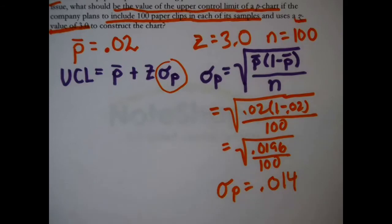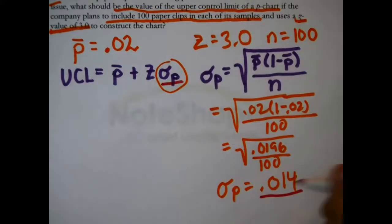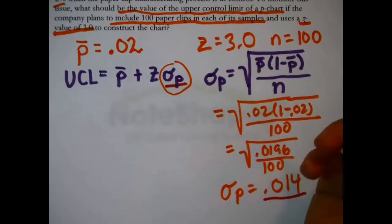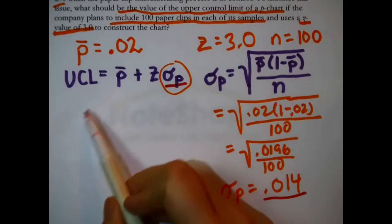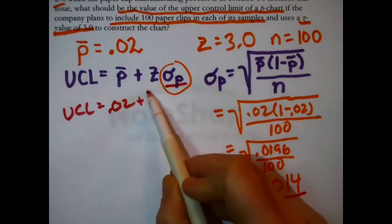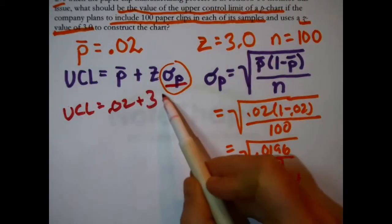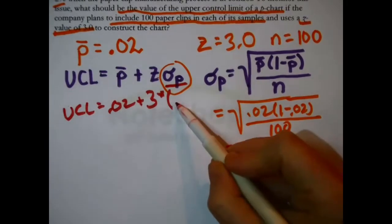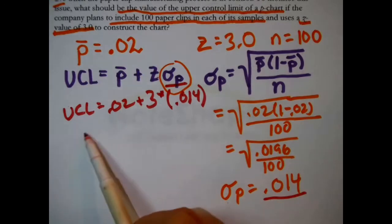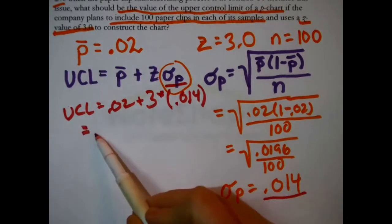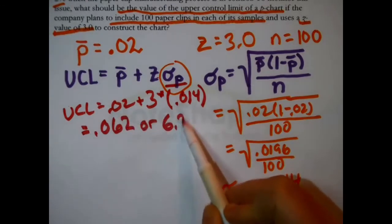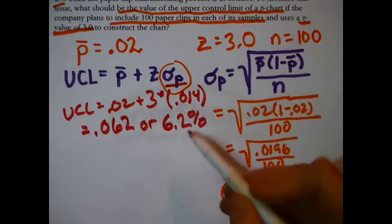Now that was needed to go here. Now we have everything that we need to go back up to the top and calculate the actual thing that was asked for, which is the upper control limit. So the upper control limit in this case is 0.02, P-bar, plus three, that's what we were given, times that number we just found, standard deviation in the sample proportions. So I get that that adds up to 0.062, or stating it more intuitively as a percent, 6.2%.